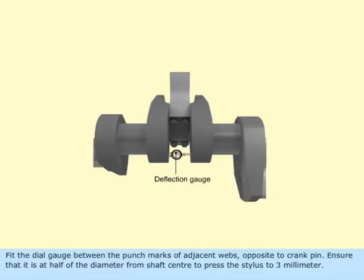Fit the dial gauge between the punch marks of adjacent webs opposite to crank pin. Ensure that it is at half of the diameter from shaft center to press the stylus to 3 mm.